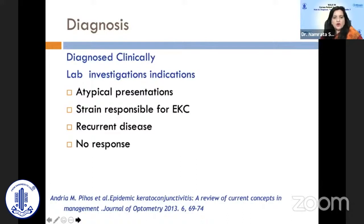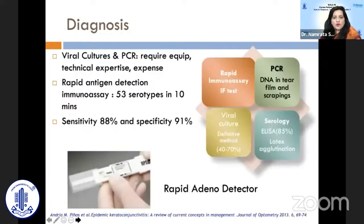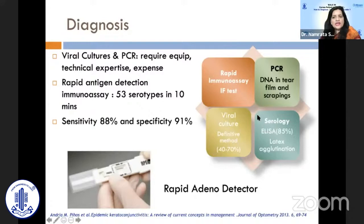Lab investigations are also warranted when identifying the responsible strain during an epidemic — commonly around July to August — or when the disease is recurrent and not responding to conventional treatment. More recently, the rapid adeno detector test has come into use: sensitivity is 88 percent, specificity is 91 percent, it detects 53 serotypes, and results are available within 10 minutes. PCR, viral cultures, and serology (ELISA, positive in 85 percent of cases) can also be performed, though serology is more for research than clinical diagnosis.